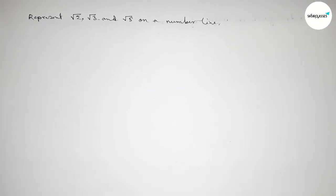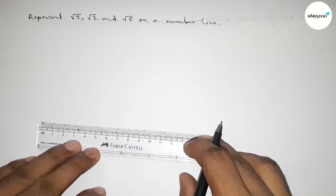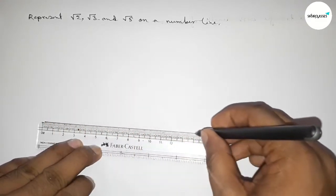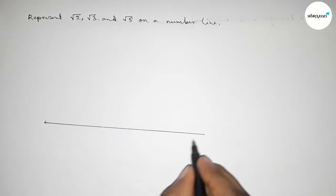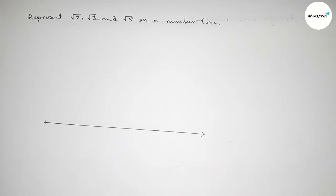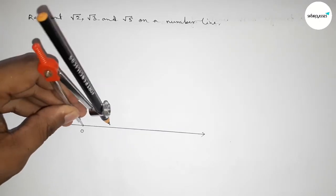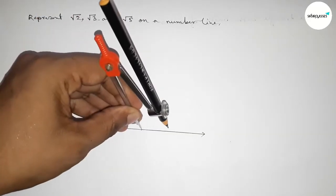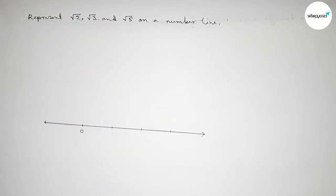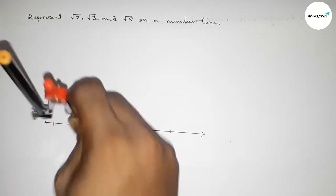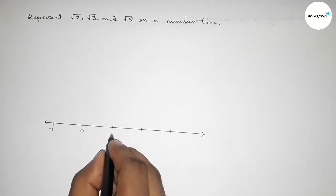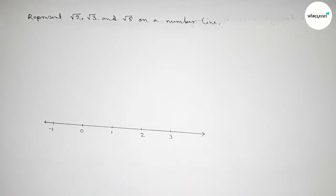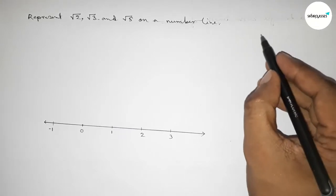First of all, we have to draw a number line. Drawing a line of any length and taking arrow marks on both sides. Taking here number 0, and by the help of a compass — taking any length of one unit — marking the numbers on the line: minus 1, 1, 2, 3, and so on.